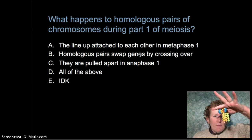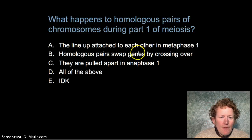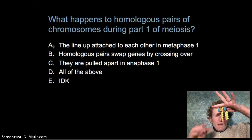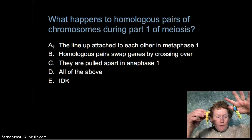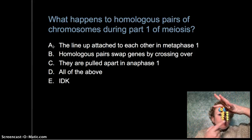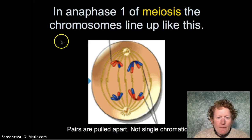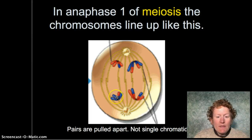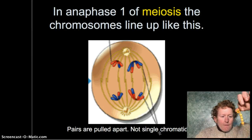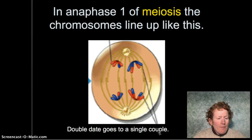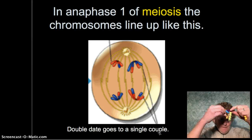What happens to homologous pairs during part one of meiosis? They line up attached to each other in metaphase one — this only happens in meiosis, where two of the same chromosomes line up and switch information. Some of mom's genes go on dad's chromosome and some of dad's genes go on mom's chromosome. In anaphase one of meiosis, the chromosomes travel as a pair — there are still two copies, and this is 2N when they're pulled apart. They're not single chromatids; a single chromatid is just one copy.